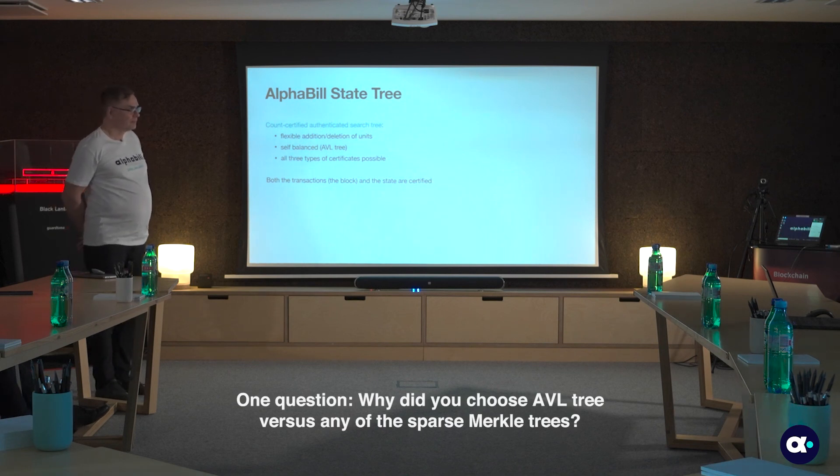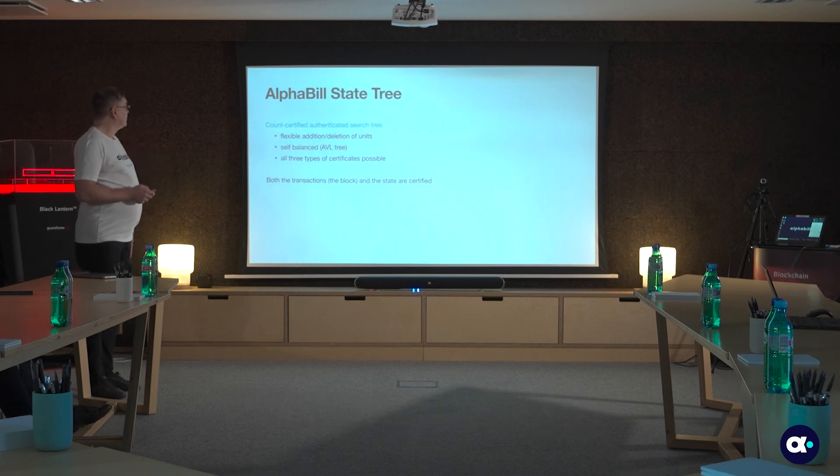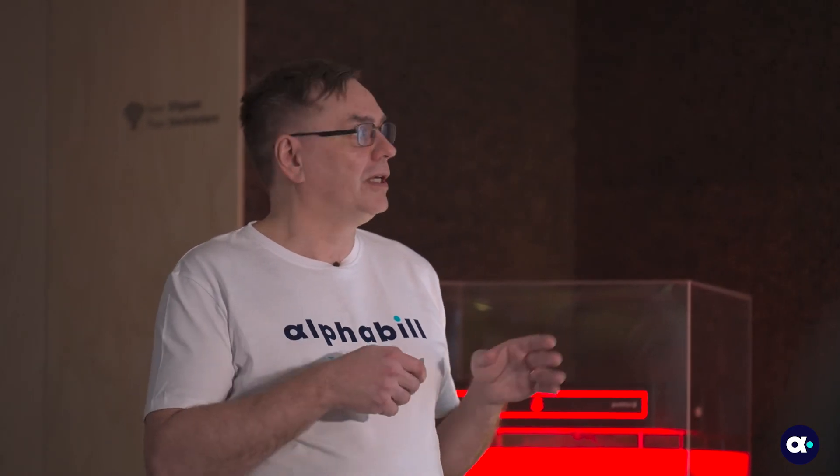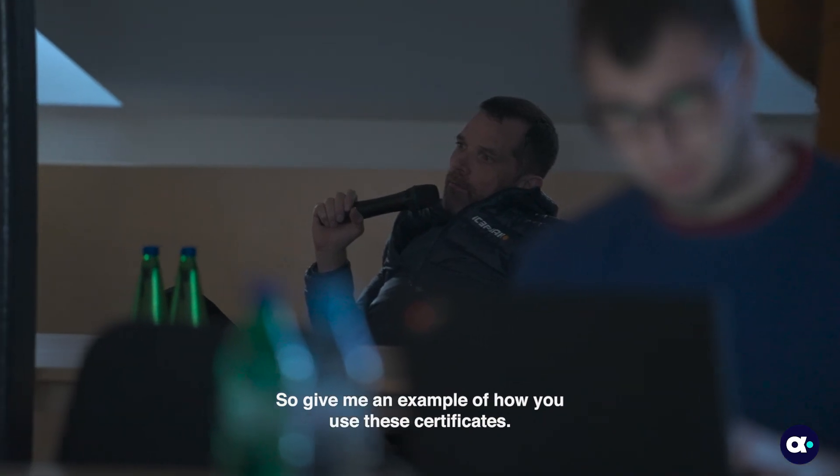Why choose AVL trees versus sparse Merkle trees? Sparse Merkle trees can also be used — it is a particular technical choice. The balance factor of 1.44 guarantees certificates are within a certain size range. AVL trees are in a certain way optimal search trees for the average certificate size. There are different options — red-black trees, sparse Merkle trees — and any of these tree types could achieve the required properties. AVL is a particular design choice.